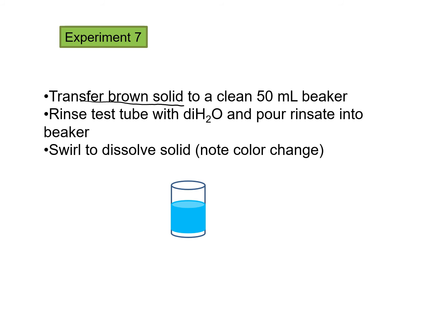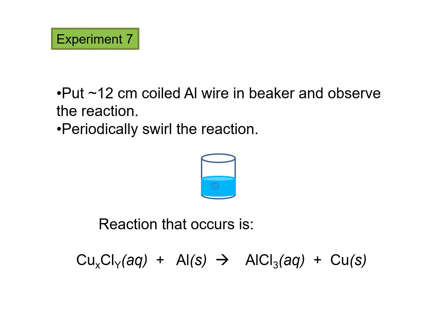Next, take the brown solid from the test tube and put it in a clean beaker. Use DI water to rinse the test tube to make sure all of the brown copper chloride solid gets into the beaker, then swirl to dissolve it. Observe any color changes and record them in your lab notebook. Now you have your copper chloride aqueous solution in the beaker. Get a 12-centimeter aluminum wire, coil it up, and add it into the beaker. Record any observations you see.